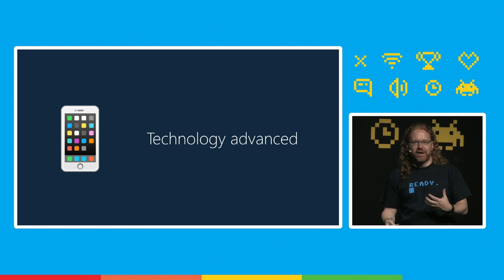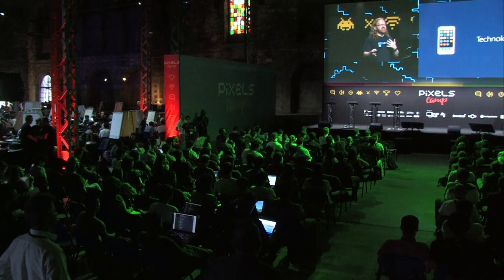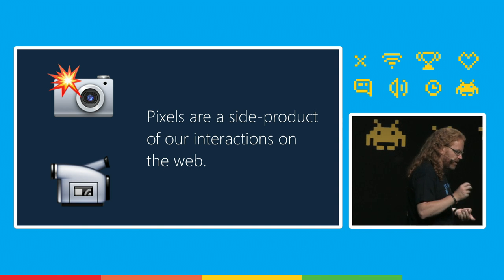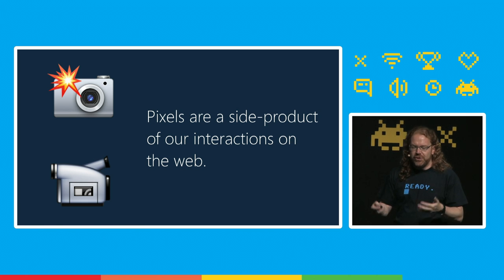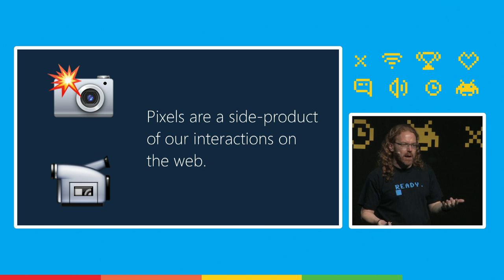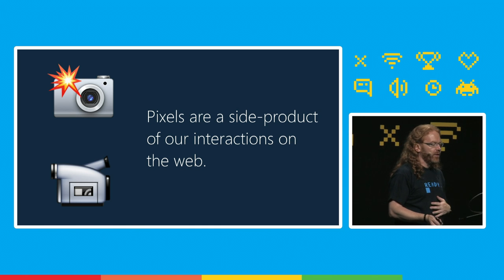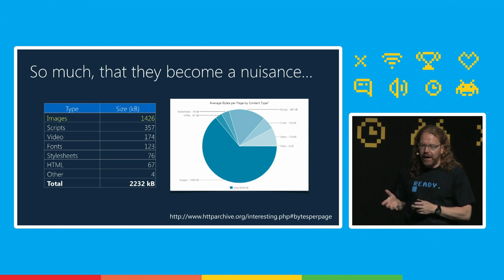We use mobile phones to explore our world and tell the world where we are with social media — selfies, pictures everywhere. Pixels are a side product of our interactions with the web. Most of what's going on now is cameras, video, movement, and VR. People put a lot of images on the web, making it really slow for people on slower connections. The average website is 2.2 megabytes, and 1.4 megabytes of that is images.